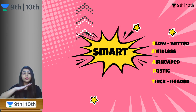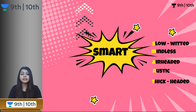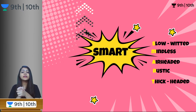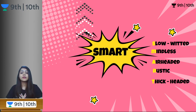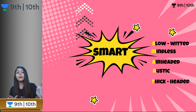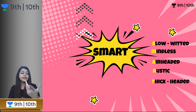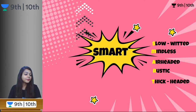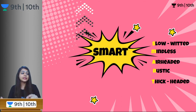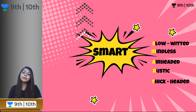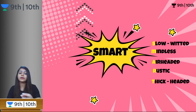Now let us look at words going away from smartness — words that do not have smartness. S for slow-witted: if sharp-witted is clever, slow-witted is somebody who is dumb. M for mindless: again somebody who is dumb. A for air-headed: somebody who is silly and makes silly mistakes. R for rustic: somebody who is simple. T for thick-headed: again somebody who is dumb. All these words are going away from smartness.